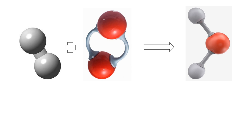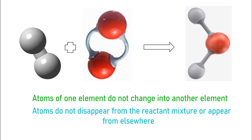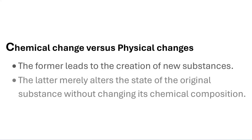It is worth noting that in a chemical reaction, atoms of one element do not change into those of another element. It is also worth noting that atoms do not disappear from the reactant mixture or appear from elsewhere. Chemical reactions are different from physical changes in that the former leads to the creation of new substances, while the latter merely alters the state of the original substance without changing its chemical composition.